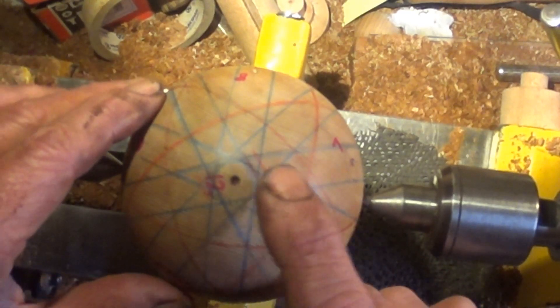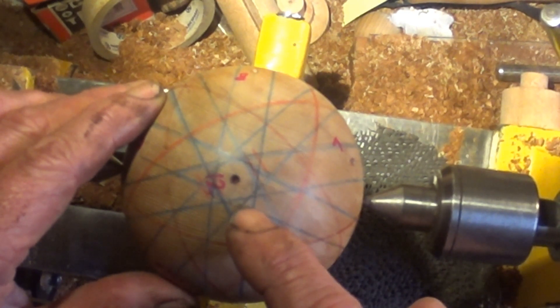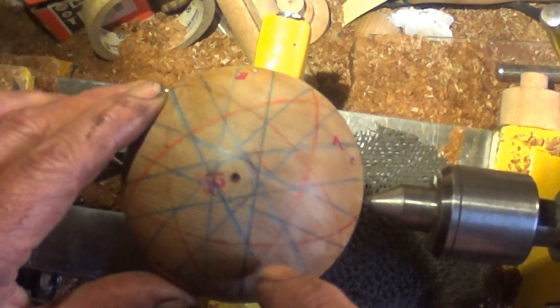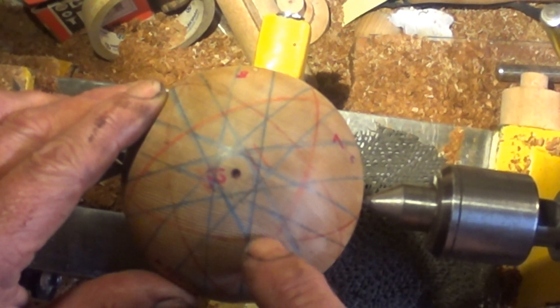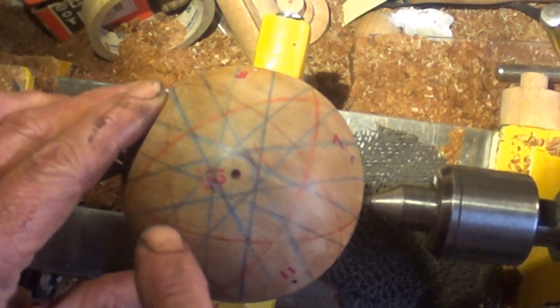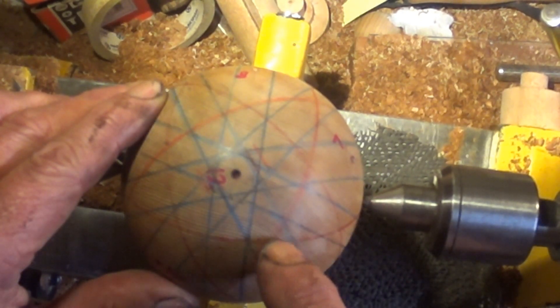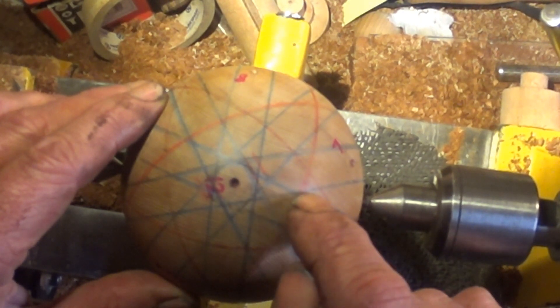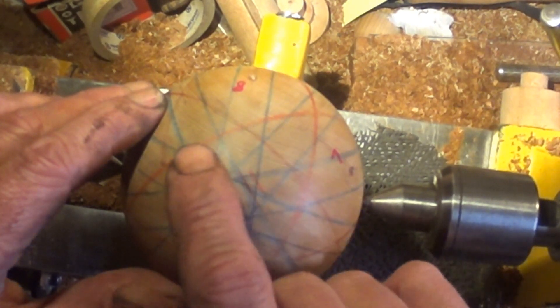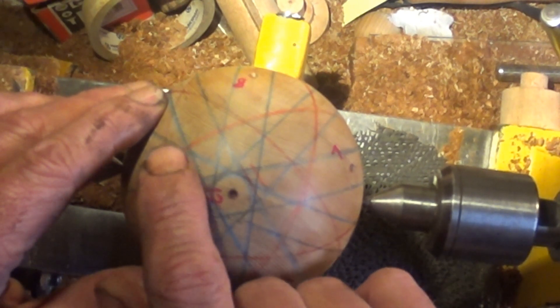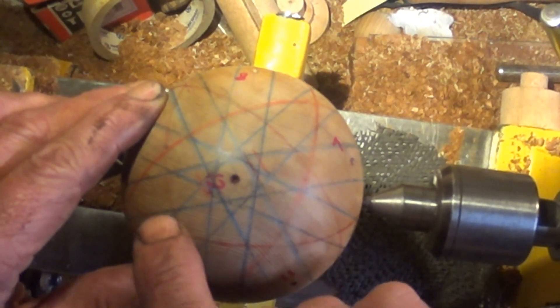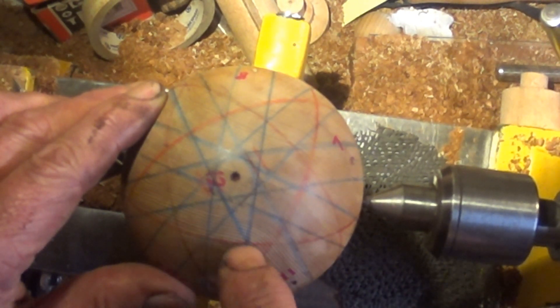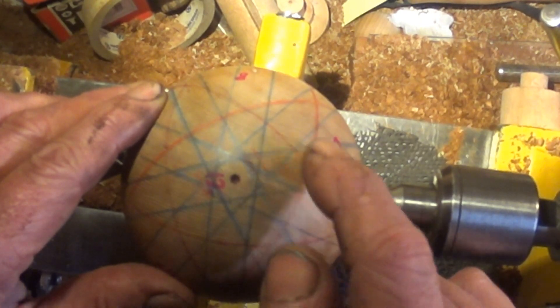Right, so I've marked on the first set of parallels. What we can see on our baseline grid, the red grid, is a nice ten-pointed, very symmetrical-looking star, the tips of which are ending on that pentagon.